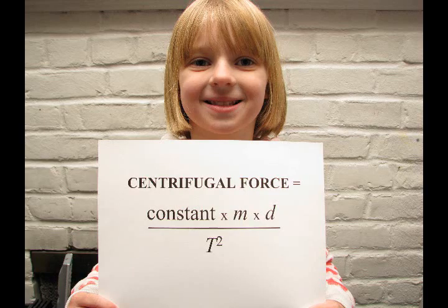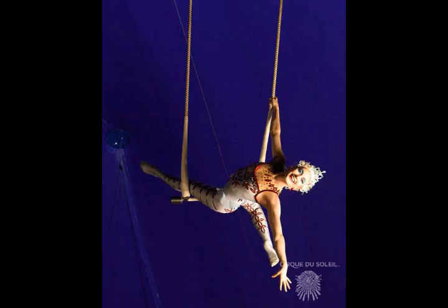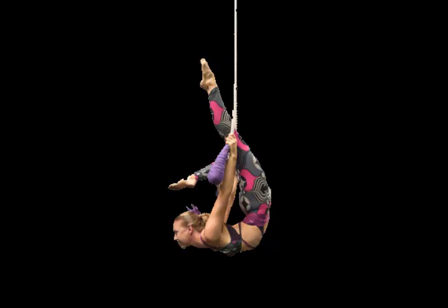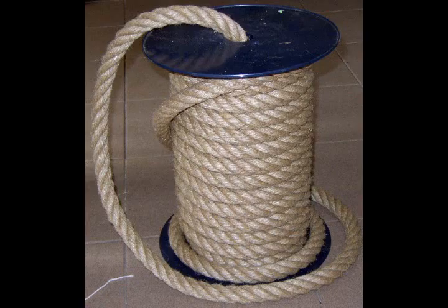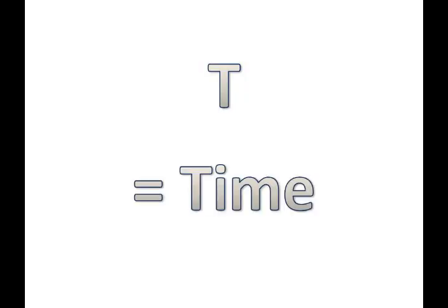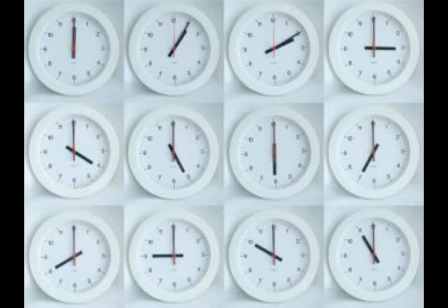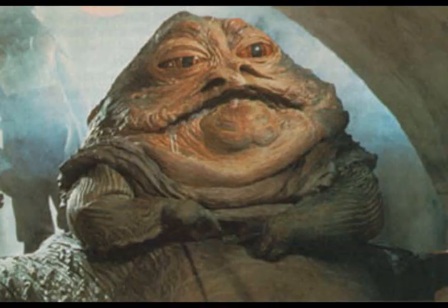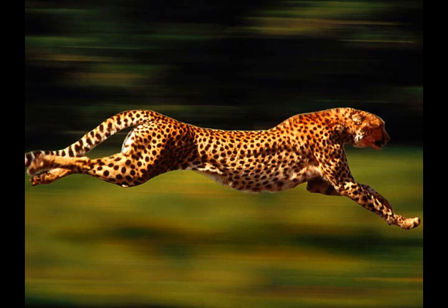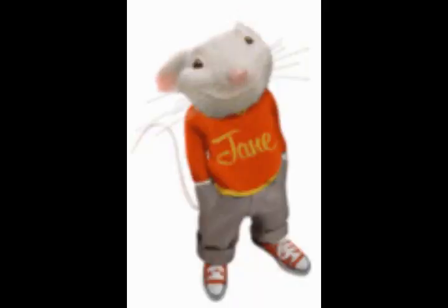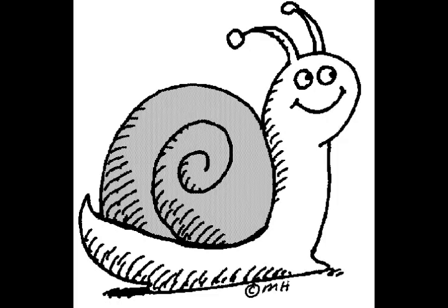It looks like this. If we continue with Newton's suspicious person on a rope example, then M — mass — stands for the size of the person being swung. D — distance — stands for the length of the rope. And T — time — stands for how long it takes to do one revolution. So if you have a large person or object swinging around by a long rope very quickly, you'll have a much greater centrifugal force than a small person on a short rope swinging around slowly.